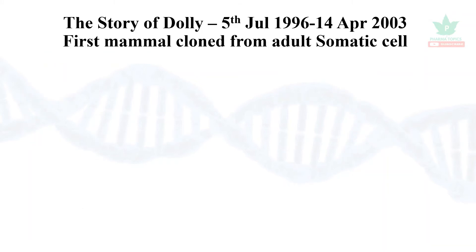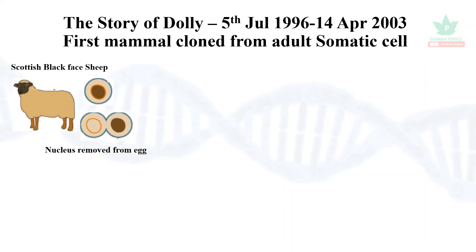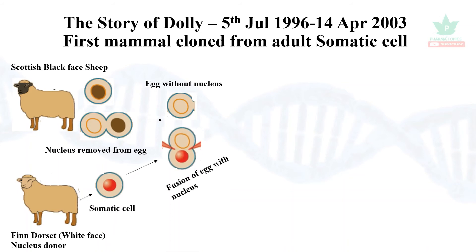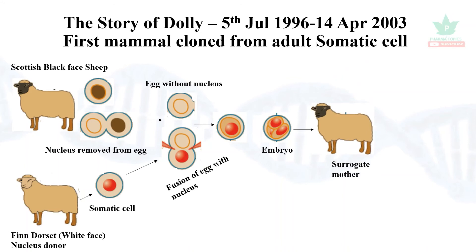The story of Dolly — the first cloned mammal. A somatic cell with a nucleus is fused. The embryo is divided and transferred to a surrogate mother. This is Dolly, a white-faced sheep produced through somatic cell nuclear transfer.